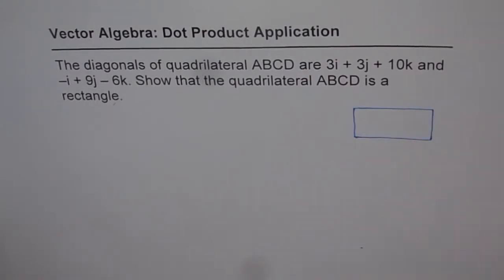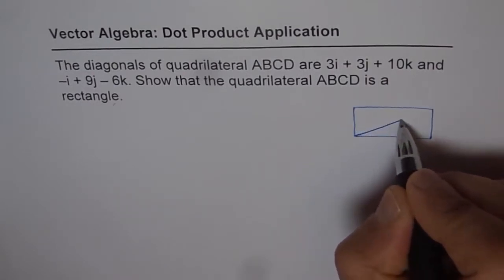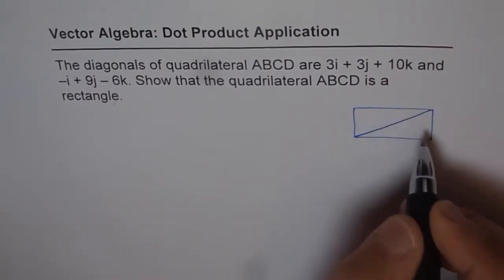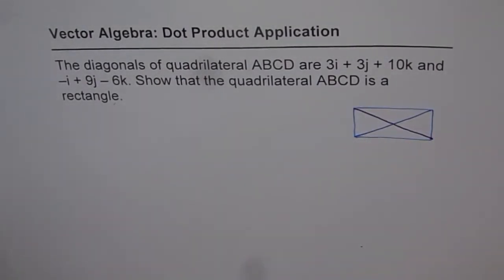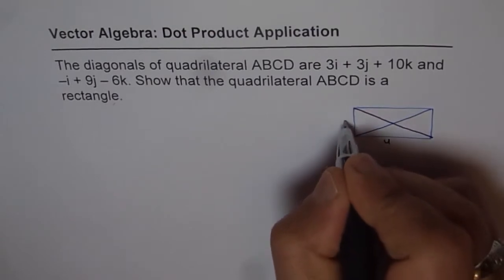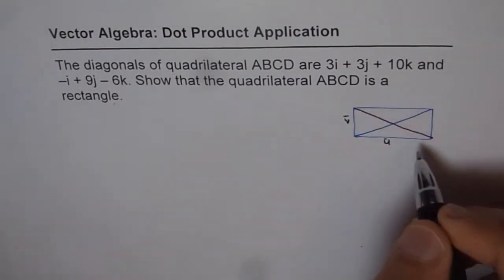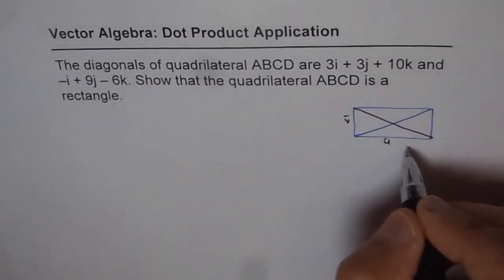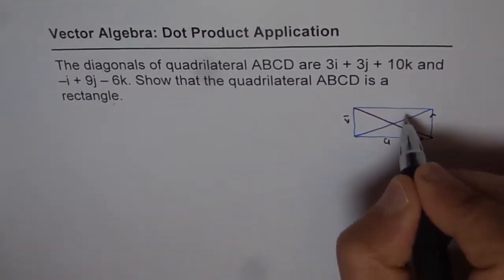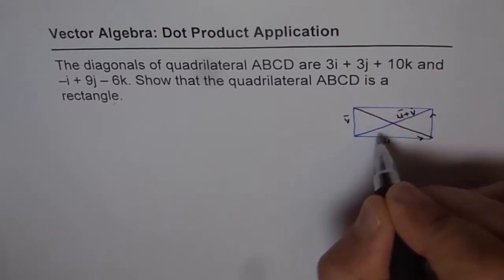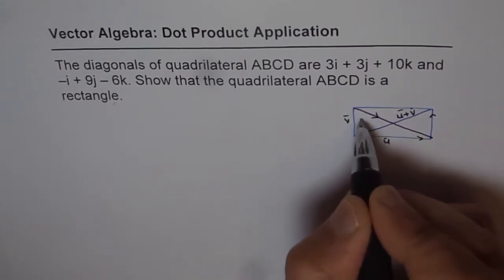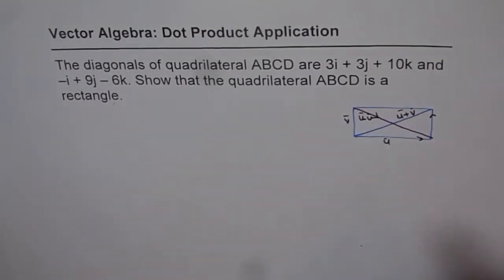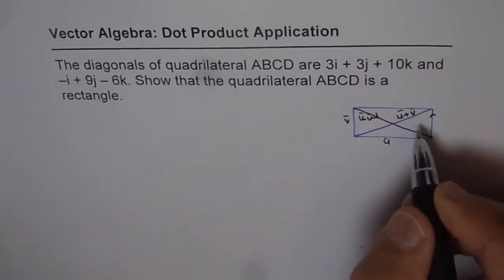Let's understand the strategy to solve this question. Say we have two diagonals in the rectangle — a vector u and a vector v. So one side of the quadrilateral will be u + v, and the opposite side will be u - v.